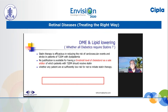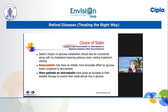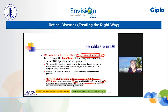A few words about lipid-lowering agents. If the lipid profile is deranged, all of us tend to give statins, and the choice of statin is shifted from atorvastatin to rosuvastatin, primarily because it has a more favorable effect on diabetic control. Also, if triglyceride levels are raised, the drug of choice becomes fenofibrate.